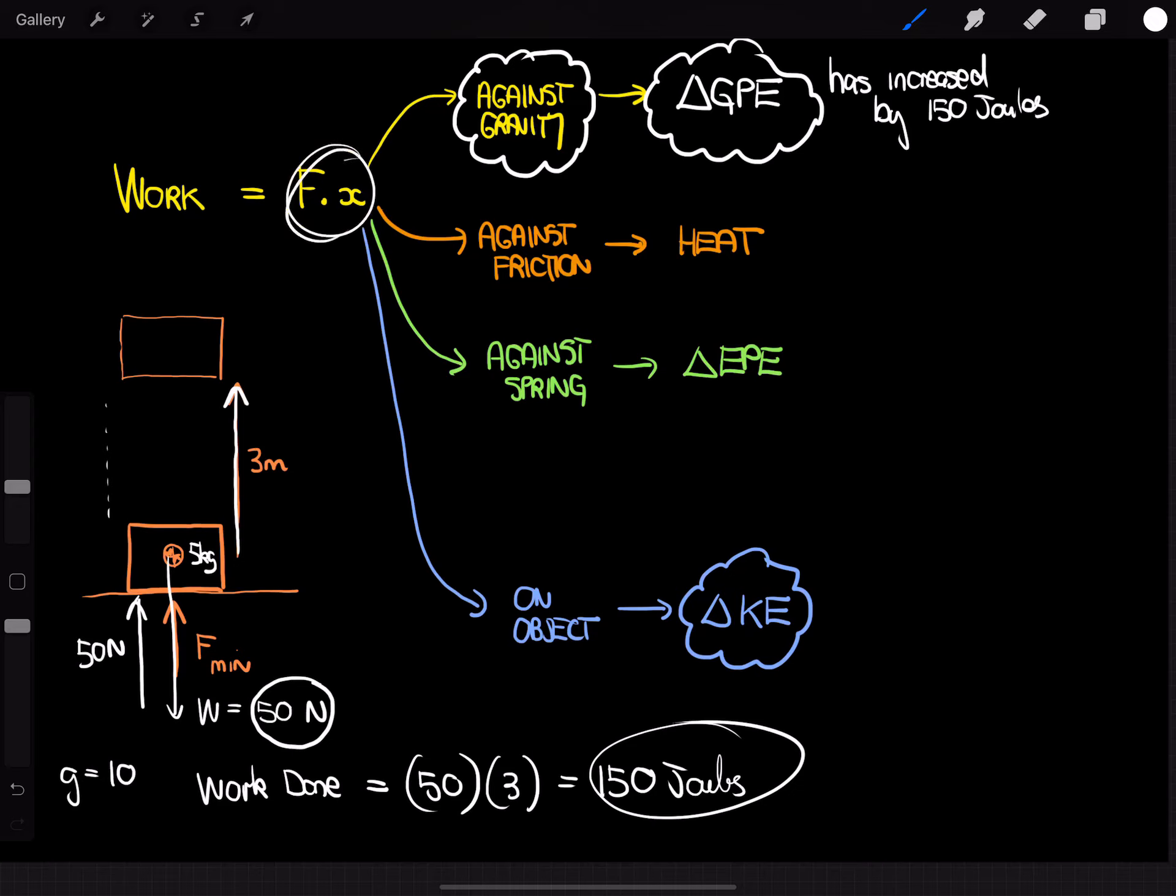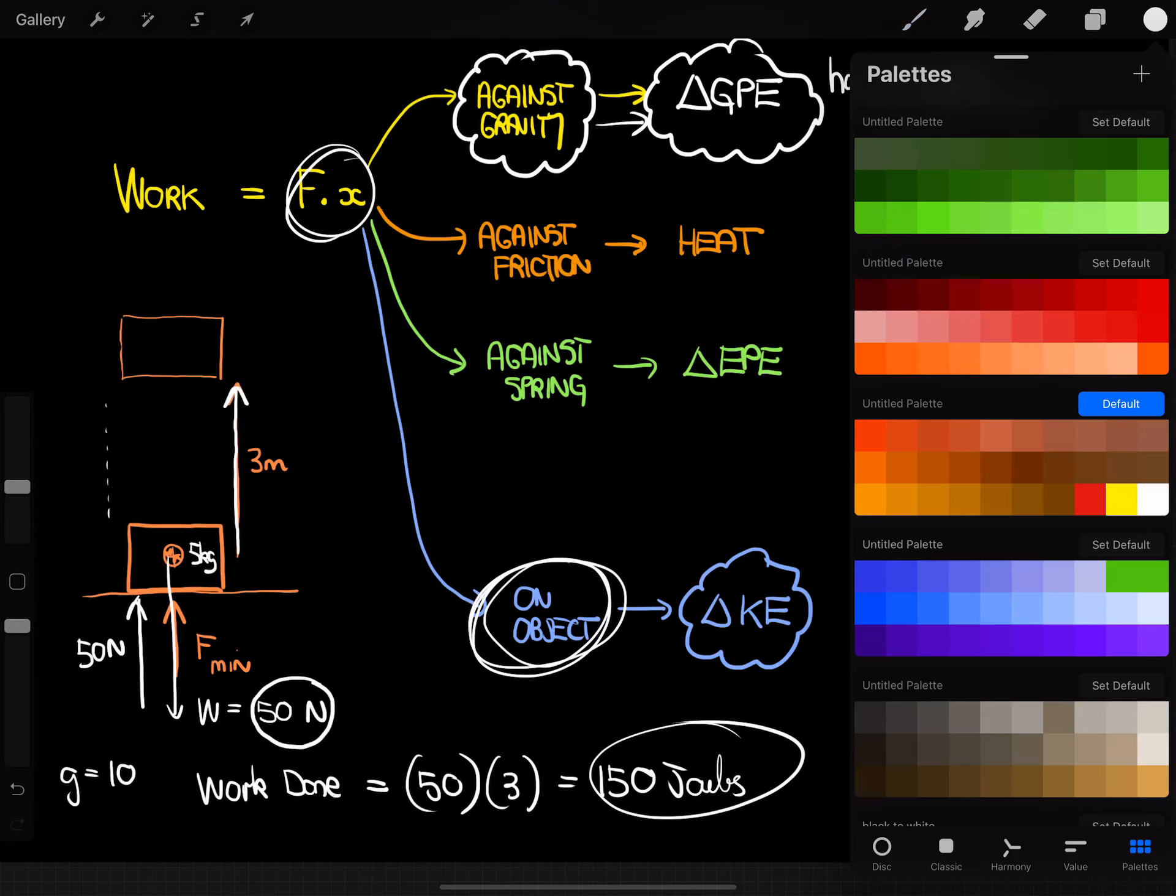So when you do work against gravity, it contributes to its change in gravitational potential energy. Remember, when we did work on an object where there's no gravity or no friction, it goes towards its kinetic energy. Just two other quick examples, or two other quick scenarios we want to look at.